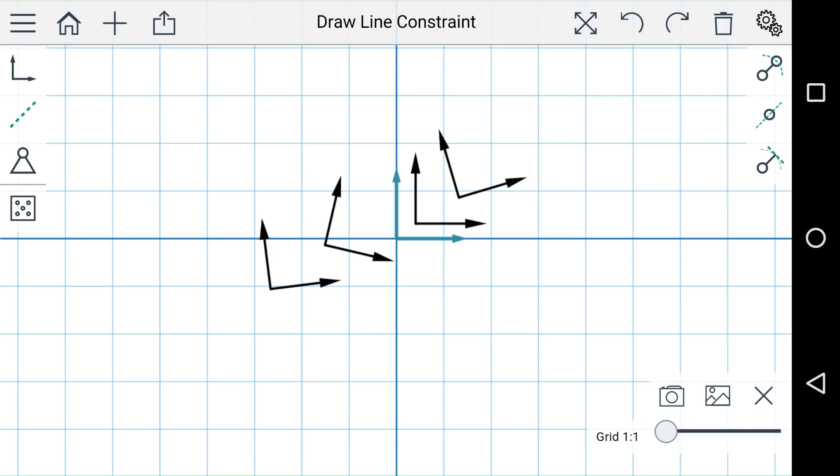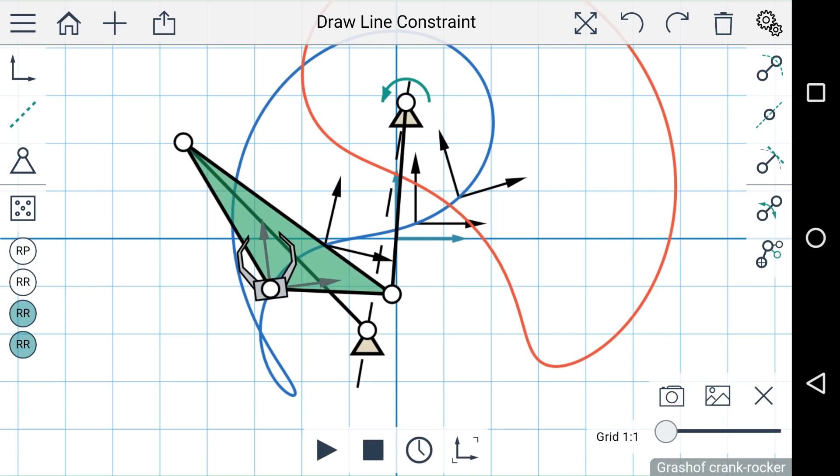I'm going to tap and drag to draw the line, and you can see that a mechanism has been generated and both of the ground pivots do in fact fall on that line.